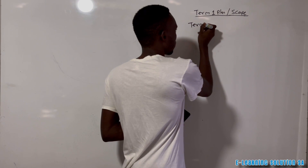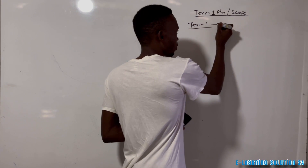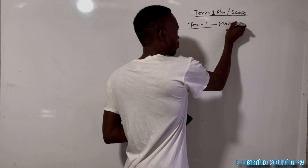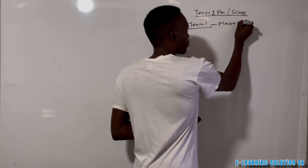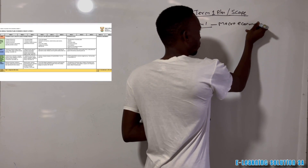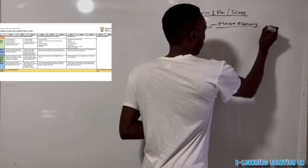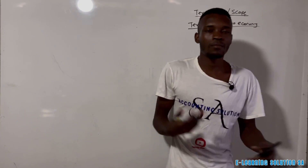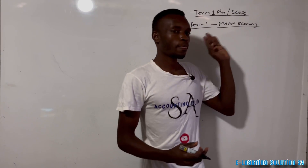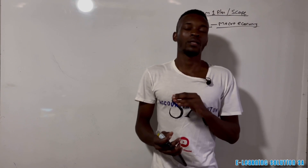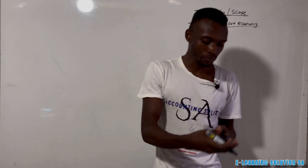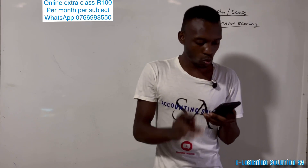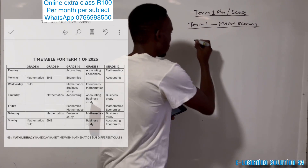The first item you need to know about Term 1 under Economics is that you are going to do macro economy. If you are writing Paper 1 and Paper 2, this scope is for Paper 1 for Term 1.